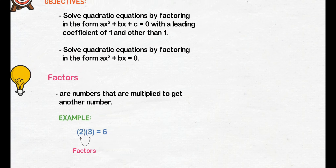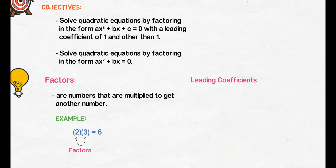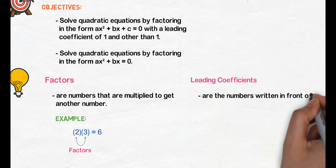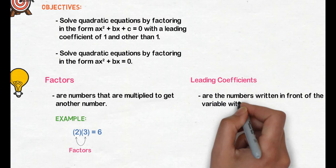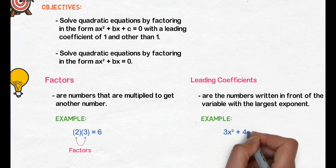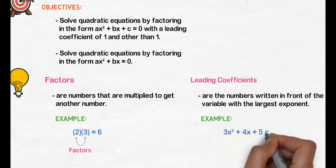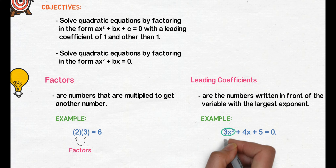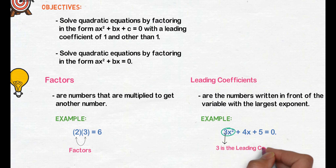Next, define naman natin ang leading coefficients. Leading coefficients are the numbers written in front of the variable with the largest exponent. Example, 3x squared plus 4x plus 5 equals 0. Ang term na 3x squared ang merong pinakamataas na exponent. So, 3 is the leading coefficient.